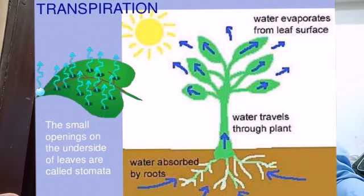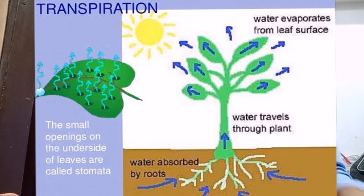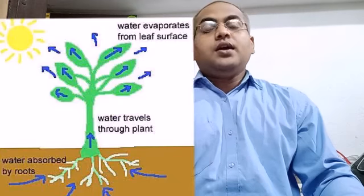Because of this pressure, water reaches the leaves. In this way, transpiration is also helpful for the transport of water and mineral nutrients to the different parts of the leaves.